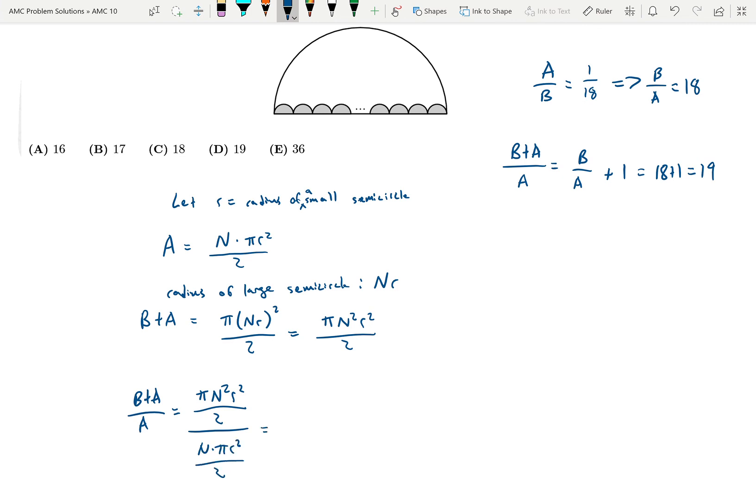So here I'm going to get 2 times pi N squared R squared over 2N pi R squared. Everything is going to cancel and there will be an N in the numerator.